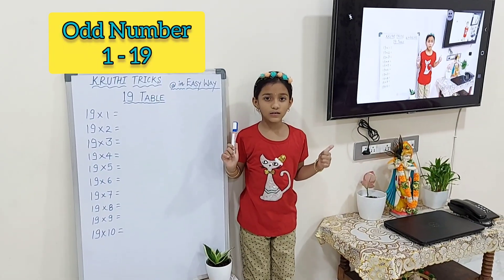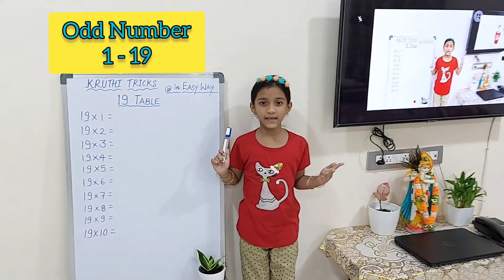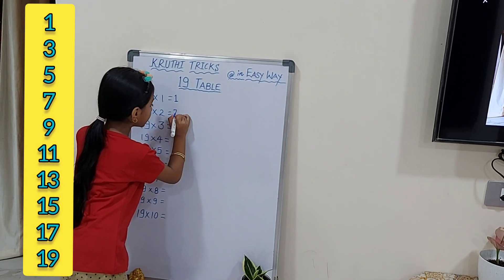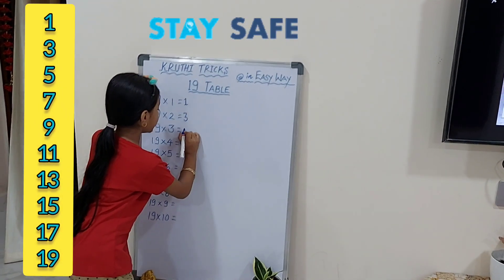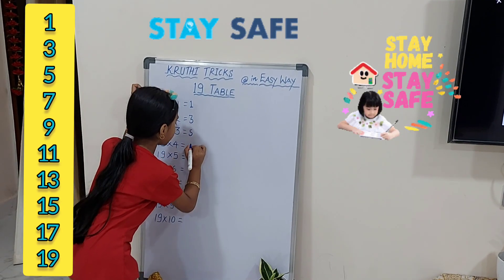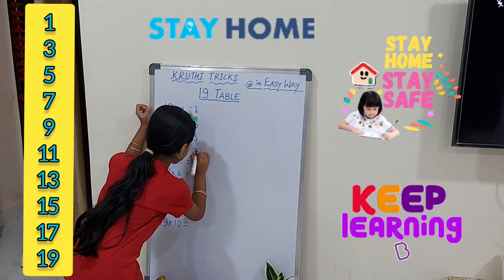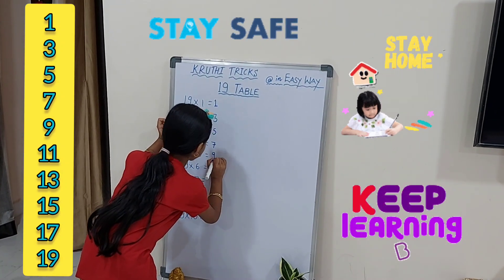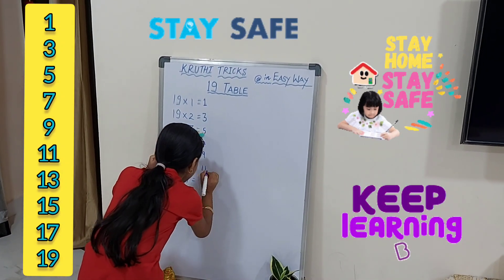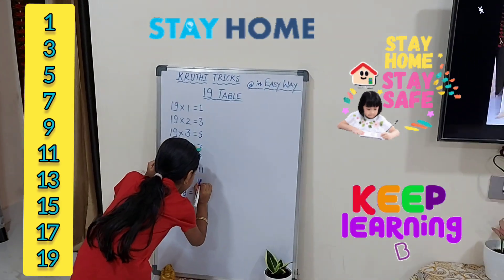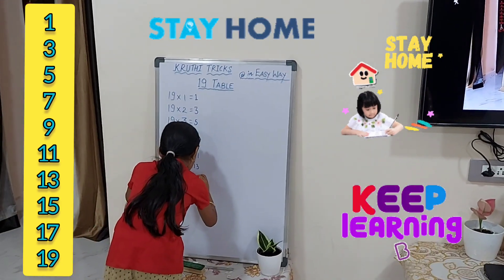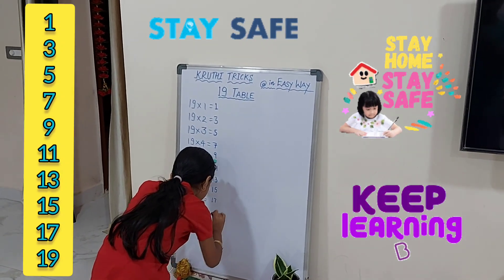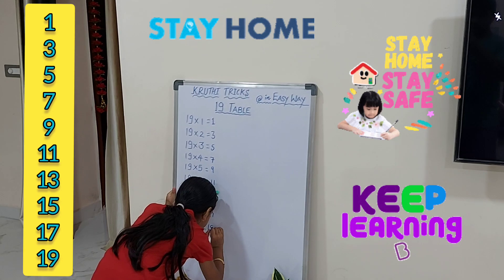First we will write all numbers 1 to 19: 1, 3, 5, 7, 9, 11, 13, 15, 17, 19, 20.